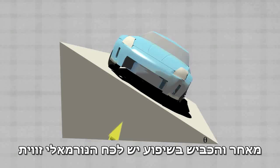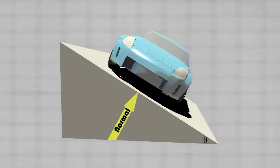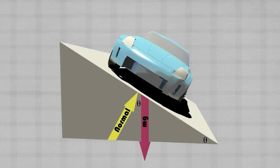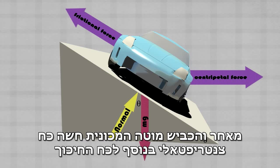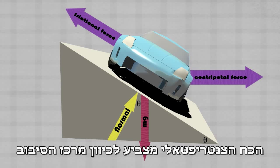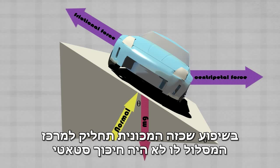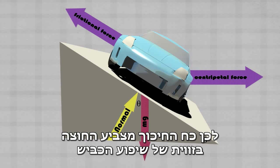Since the road is inclined, the normal force is at an angle. The force of gravity, however, is still straight down. Since the road is a banked turn, the car experiences a centripetal force as well as a frictional force. The centripetal force is center-seeking and points towards the center of the turn. On an incline like this, the car would slip into the center of the track if static friction was not present. Therefore, the frictional force points outward at the angle of the inclined road.